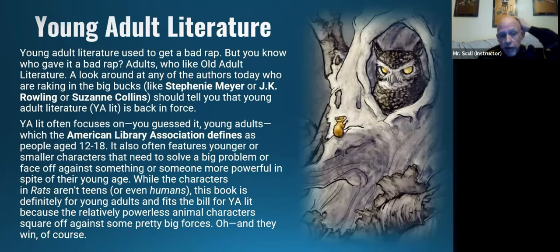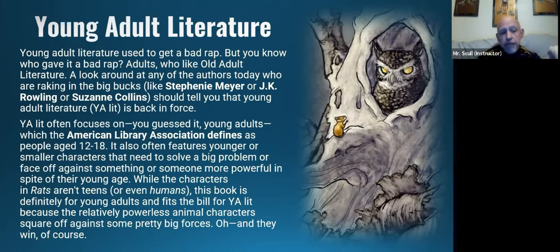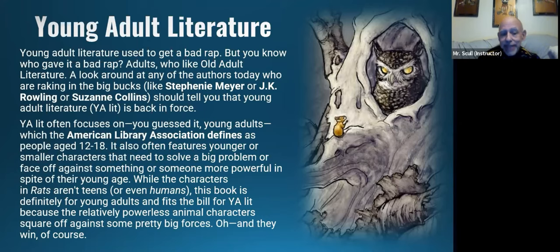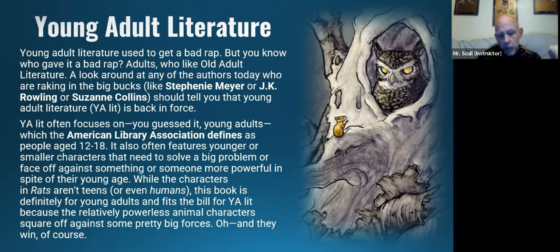Young adult literature often focuses on — you guessed it — young adults, which the American Library Association defines as people between 12 and 18. It also often features younger or smaller characters that need to solve a big problem or face off against something or someone more powerful. While the characters in Rats aren't teens or even humans, this book is definitely for young adults because the relatively powerless animal characters square off against some pretty big forces — and they win.